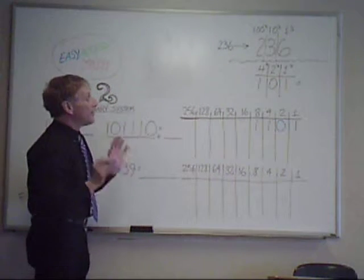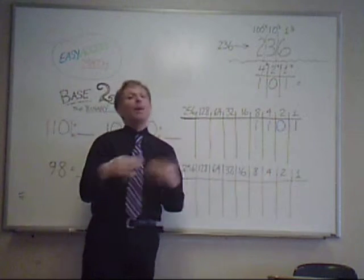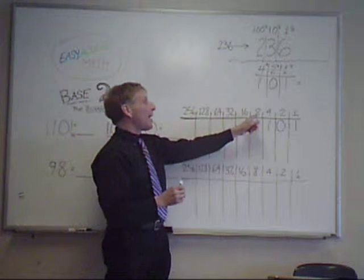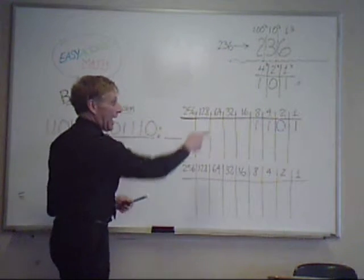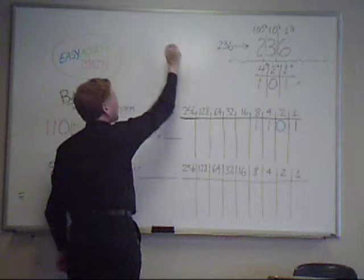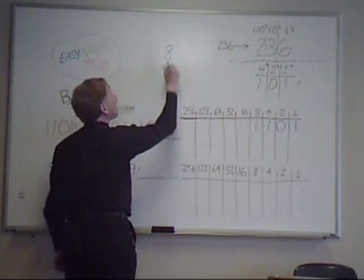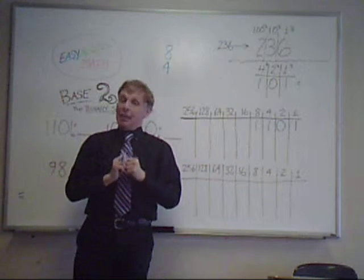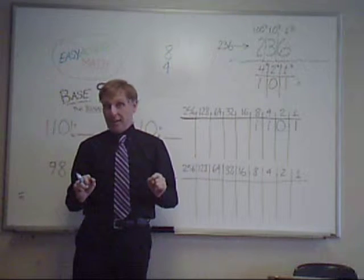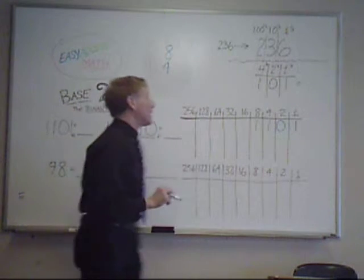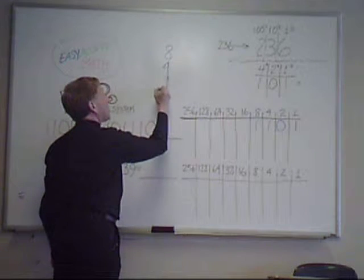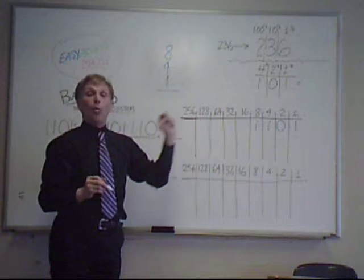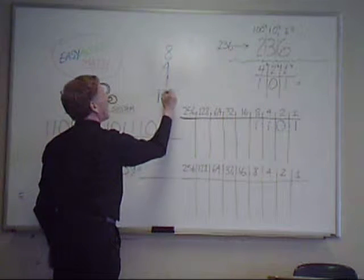And what I'm going to do is, if a column has a 1 in it. Remember, it's either 1 or 0. If it has the 1, I'll add the top of that column. So, I have a 1 in the 8 column. I'll put an 8 there. I have a 1 in the 4 column, so I'll include a 4. But, I have a 0 in the 2 column, so I'm not going to put 0 in. And, I have a 1 in the 1 column, so I'll put that in. And so, I have 8, 4, and 1. I add that up, and I have 13.